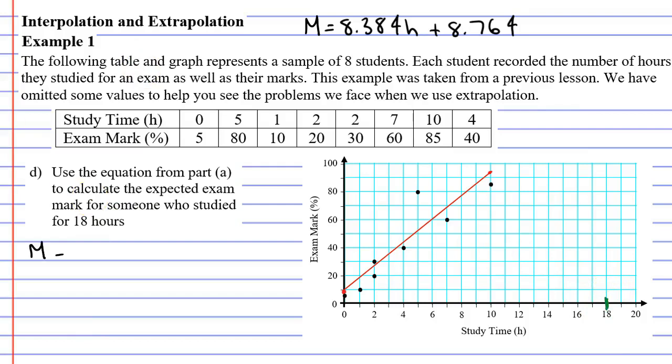So if we're going to substitute that into our equation which we can see at the top here we would go 8.384 times the number of hours which is 18 plus 8.764. Let's bring up our calculator.